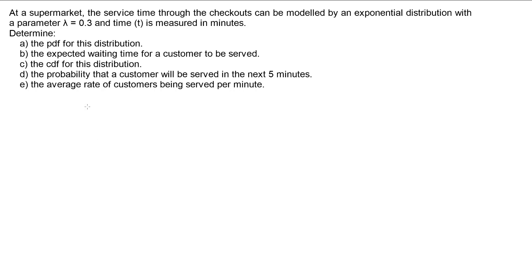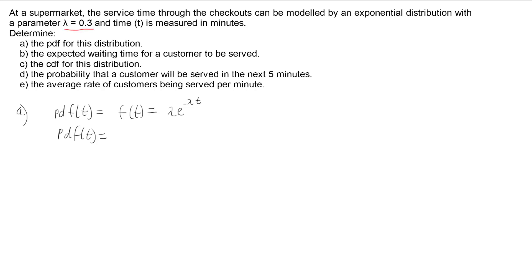Let's start with Part A. Part A is nice and easy. The probability distribution function is given by f(t) = lambda e to the negative lambda t. So our PDF for this question, because we have lambda equals 0.3, we're going to have 0.3 e to the negative 0.3t. And that's our PDF.